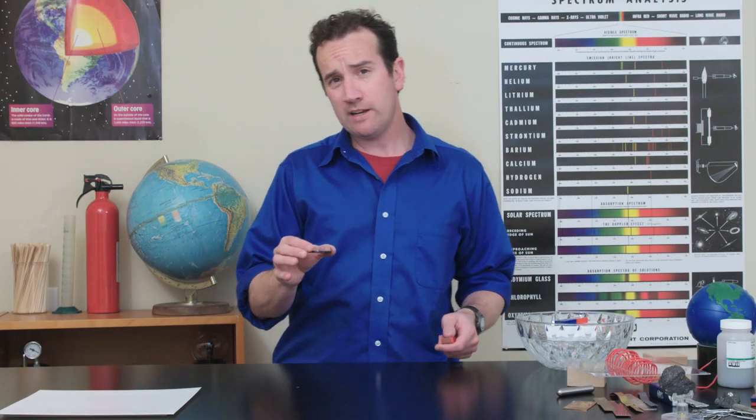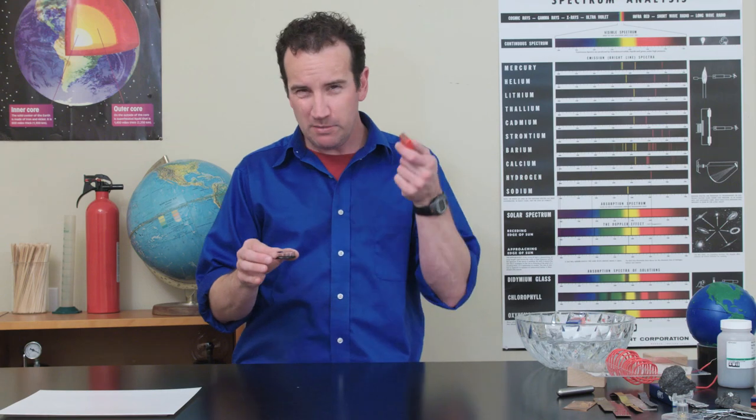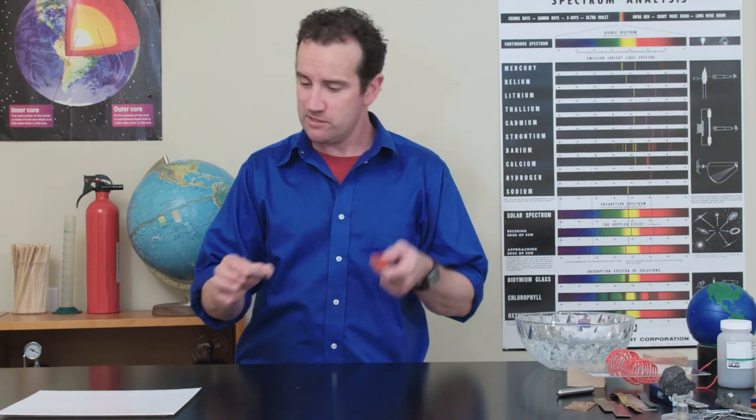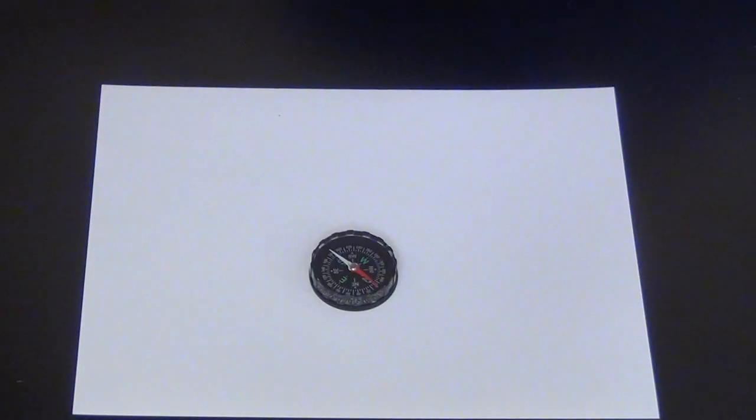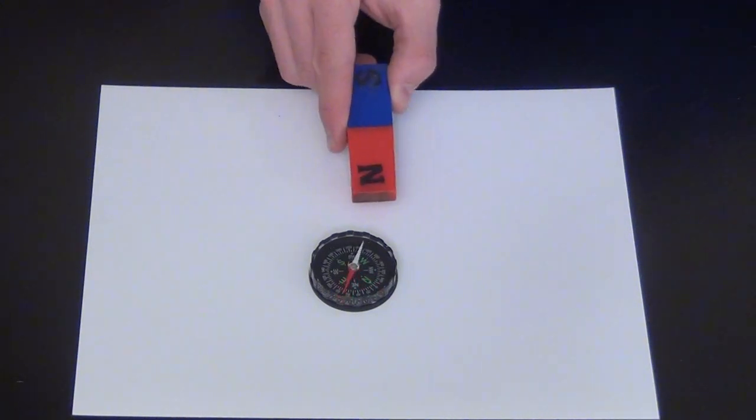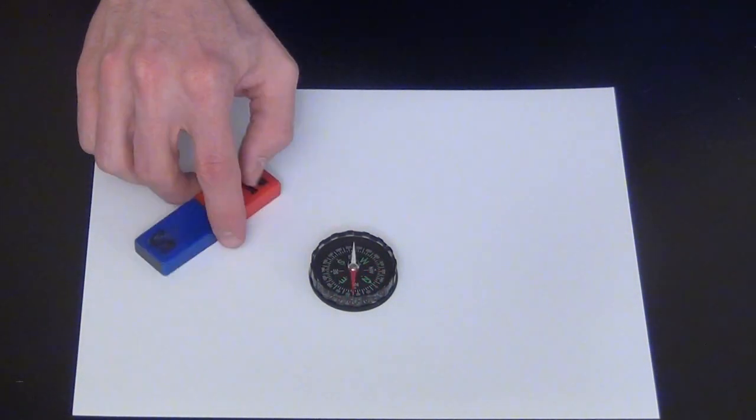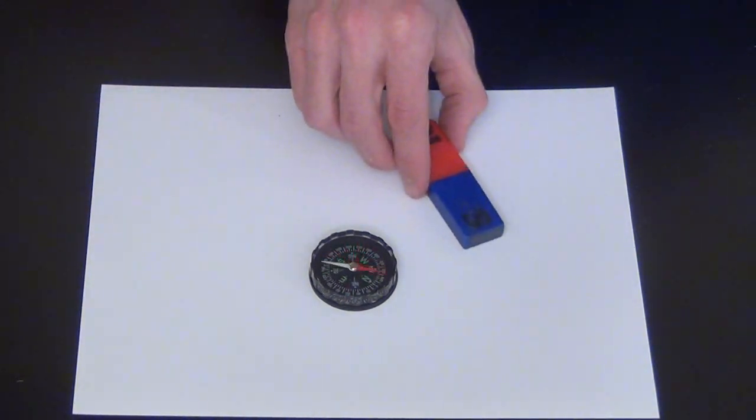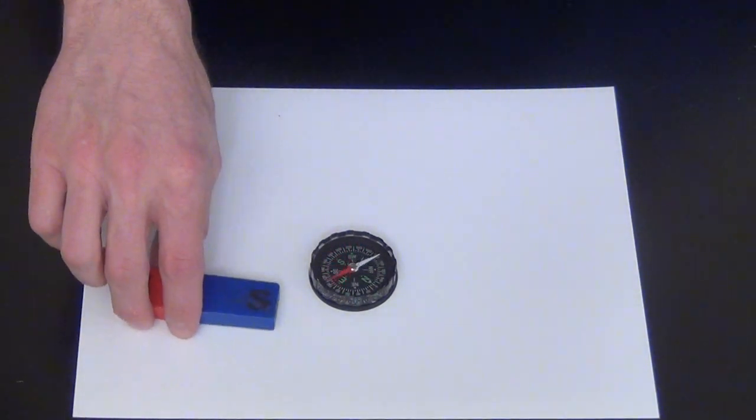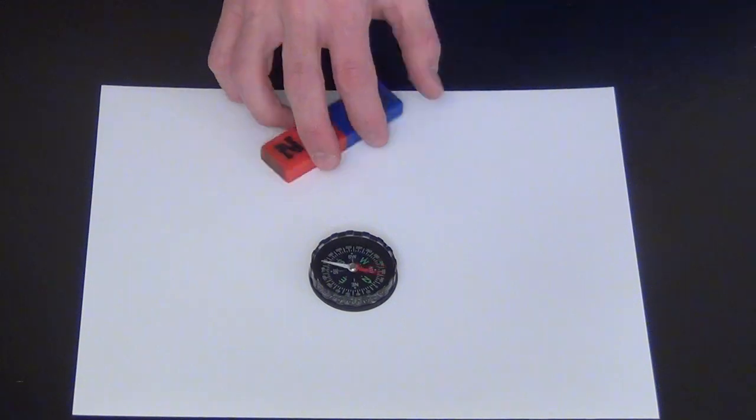Now, one thing you might not know about compasses is that they can be messed up with by magnets. Take a look. If we bring the magnet in, you can see that it seems to scare the compass needle away. And if we flip it around, it seems to pull the magnet needle toward it. This shows that compasses really are magnetic objects.